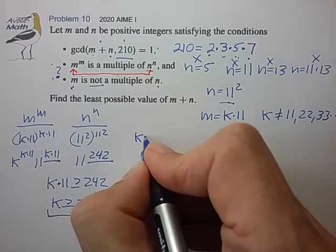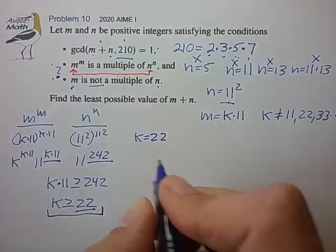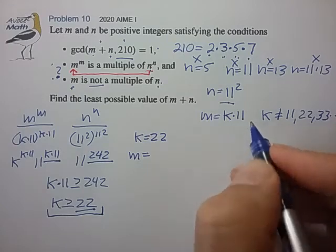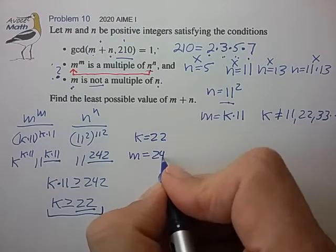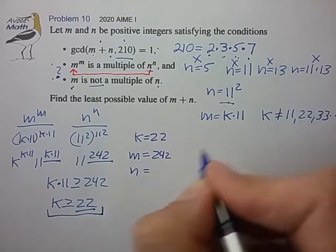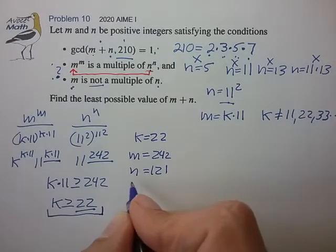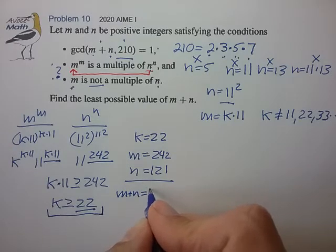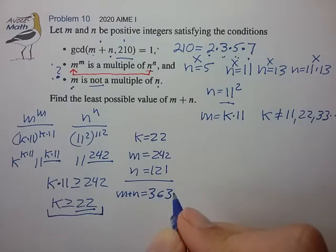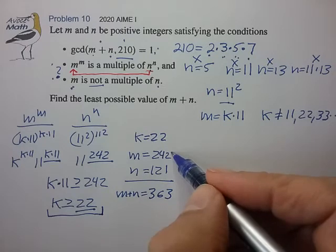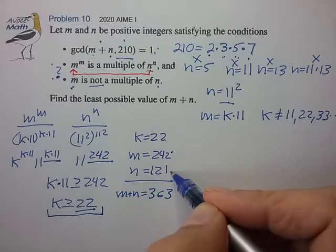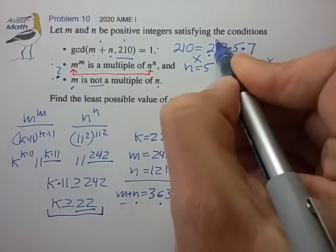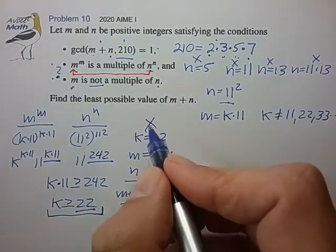So just to get a feel, if we let k equal to 22, then m will equal 22 times 11, 242, n will be 121. m plus n is 363. So this has a lot of problems. We find that m is already a factor of n, so that's no good. m plus n shares a factor with 210, so that's no good. So this fails on two accounts. Let's try the next value of k, 23. m is then 253, n is still 121, the sum 374. All right, so m is not a multiple of n, so that's good. 374 shares a factor of 2 with 210, so that's no good.